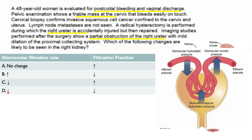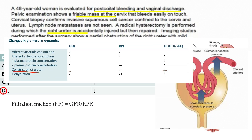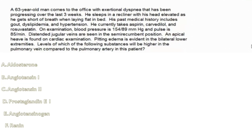We're left with C and D. Filtration fraction equals GFR over renal plasma flow. If GFR decreases, filtration fraction decreases accordingly. The correct answer is D. First Aid also has a table confirming that constriction of the ureter decreases both GFR and filtration fraction.